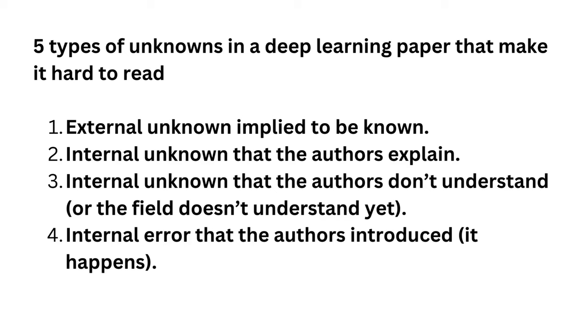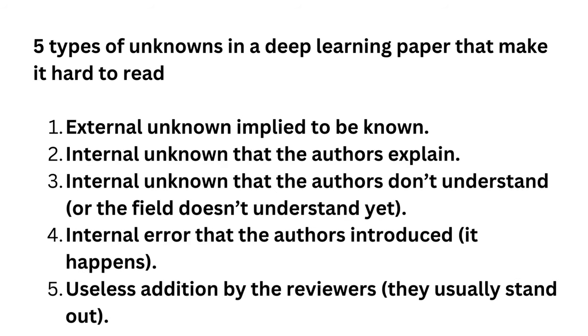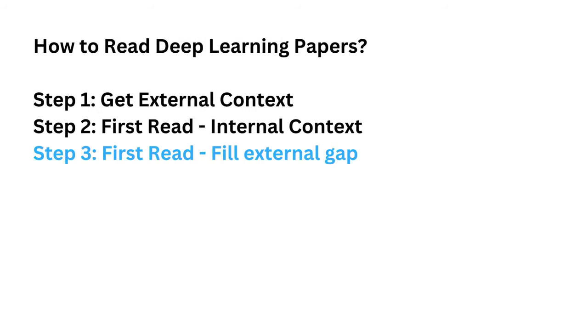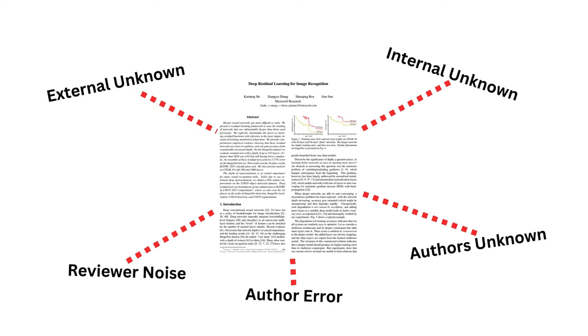The fifth type is elements of the paper that the reviewers wanted to be added before publication but provided no value whatsoever to the paper. These usually stick out of the paper. Once you're done with noting down all of the unknowns, you're ready to start to fill some gaps. Try to categorize the stuff you didn't understand into these five categories.